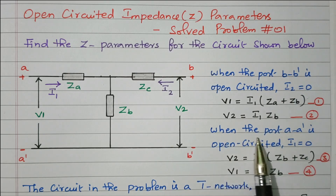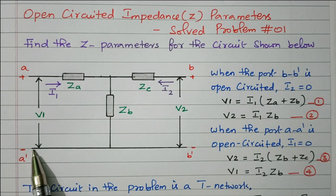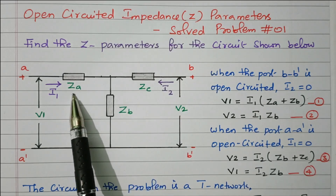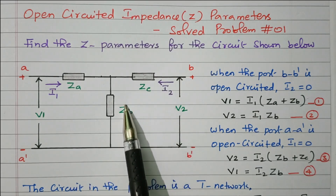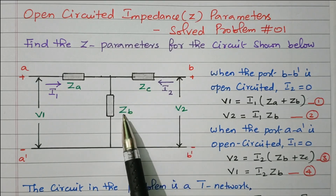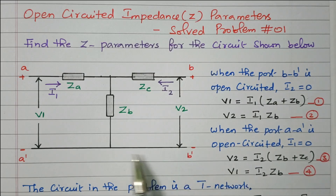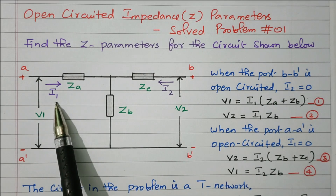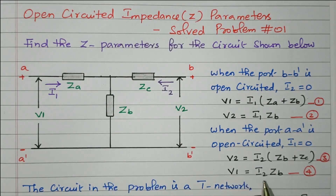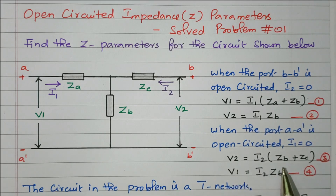Now when port AA dash is open circuited, I1 = 0. The current I2 will now flow through ZB and ZC; ZA is not taken into account. First we find V2: V2 = I2 × (ZB + ZC). Then for V1: since AA dash is open circuited, no current is flowing through that port, so V1 is the voltage across ZB, giving V1 = I2 × ZB. So we have equation 3: V1 = I2 × ZB, and equation 4: V2 = I2 × (ZB + ZC).